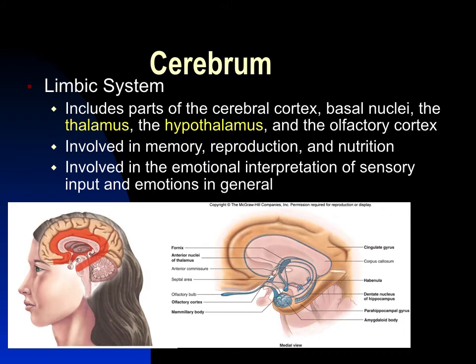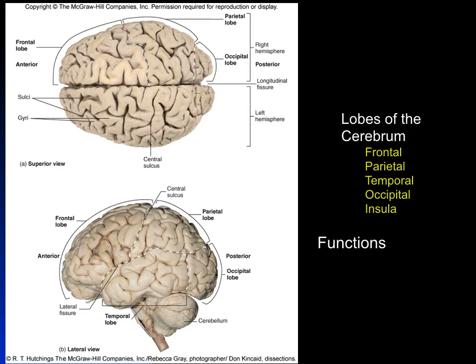The cerebrum covers almost everything else and is divided into left and right hemispheres. There is a crossover: the right hemisphere controls the left side of the body and the left hemisphere controls the right side. Each hemisphere receives sensory input from the opposite side of the body. You can see the longitudinal fissure and the different lobes — frontal, parietal, temporal, and occipital.